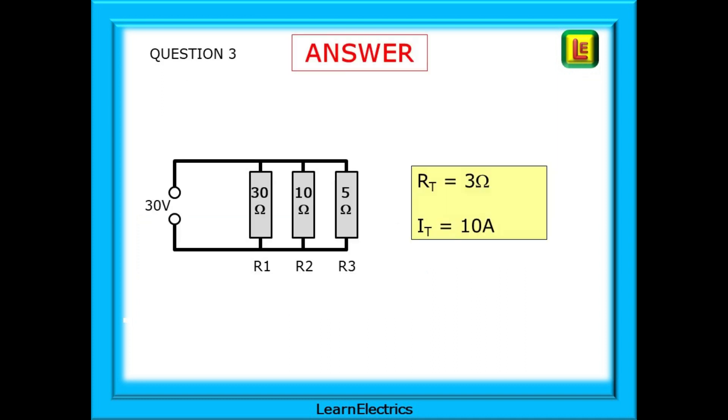And here is the answer. RT is 3 ohms, and IT, the total current, is 10 amps.